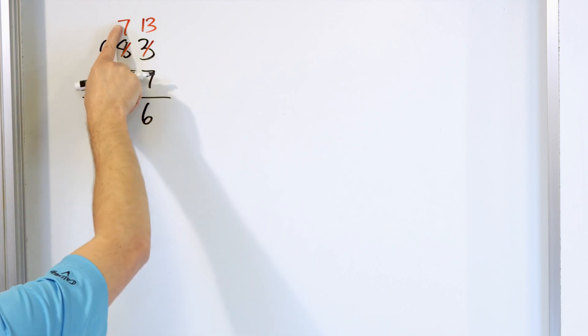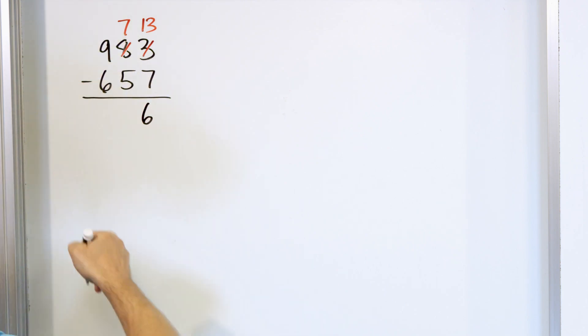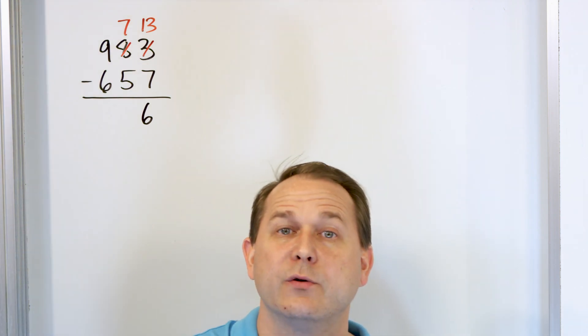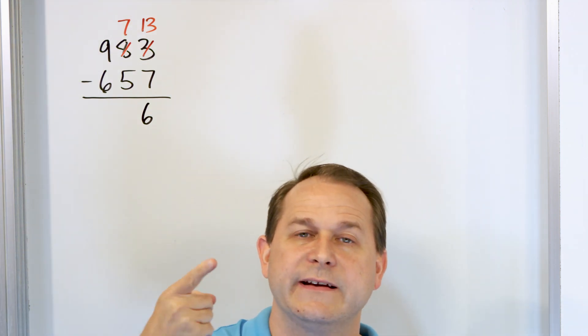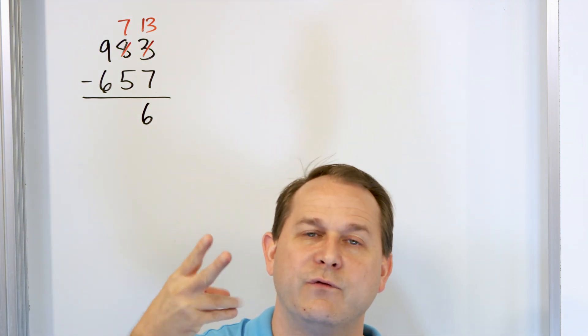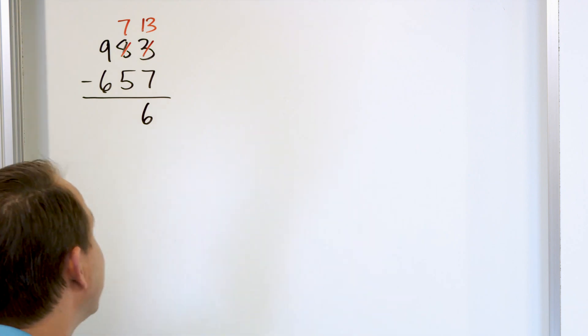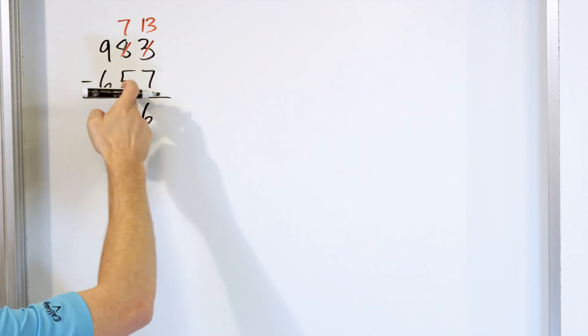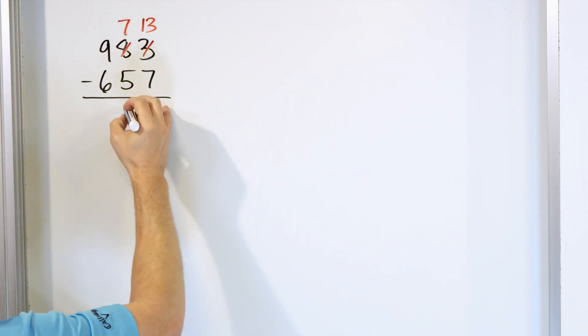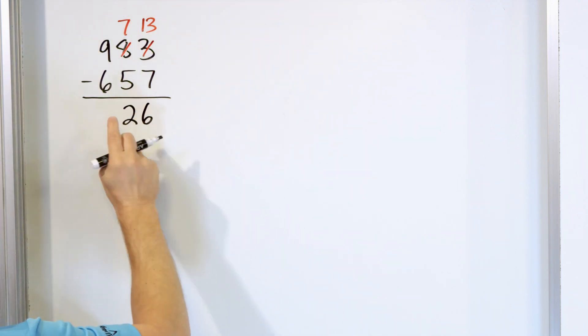Next we have 7 minus 5. We start with 7 and we go down: 6, 5, 4, 3, 2. We land on 2, so 7 minus 5 is 2.